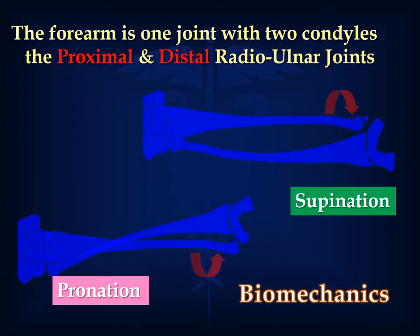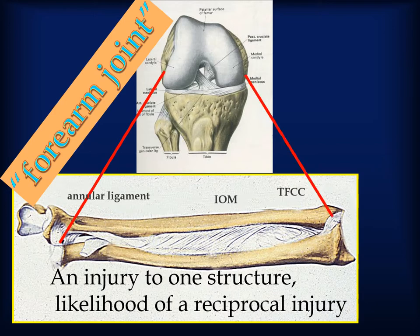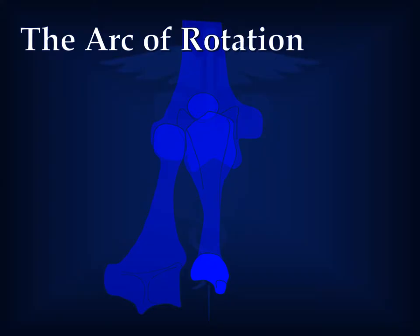One way to visualize forearm function is to think of it as one joint with two condyles that move through an arc of motion very similar to a bucket handle. The central band provides the central stabilizer and the proximal-distal ligament complexes provide added transverse and axial stability, much like the interaction of the cruciates and collateral ligaments of the knee. Furthermore, injury to any part of the forearm joint raises the likelihood of reciprocal injury along its axis. These ligaments help coordinate a stable transition of the radius as it dances around the ulna from supination to pronation and back again.